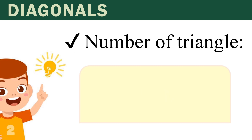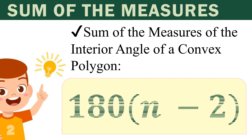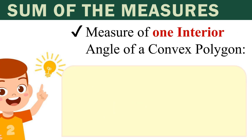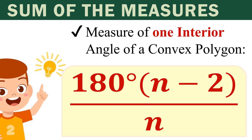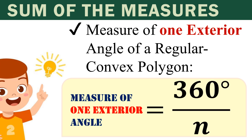For the number of triangles, the formula is n minus 2. For the sum of the measures of interior angles of a convex polygon: 180 times (n minus 2). The measure of one interior angle of a regular convex polygon: 180 degrees times (n minus 2) divided by n. The measure of one exterior angle of a regular convex polygon: 360 degrees divided by n.